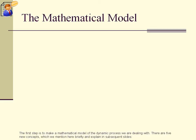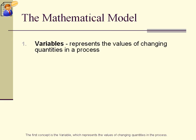The first step is to make a mathematical model of the dynamic process we are dealing with. There are five new concepts, which we mention here briefly and explain in subsequent slides. The first concept is the variable, which represents the values of changing quantities in the process.